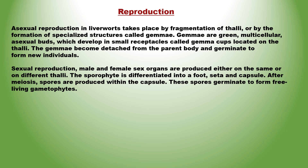Sexual reproduction in liverworts occurs by the formation of male and female organs, which are produced either on the same or on different thalli. The organs produce male and female gametes, and fusion of gametes leads to formation of zygote. The zygote develops into a sporophyte, which is differentiated into a foot, seta and capsule. Spores are formed by meiosis in the capsule. The spores germinate to form free-living gametophyte. Examples: Riccia, Marchantia.